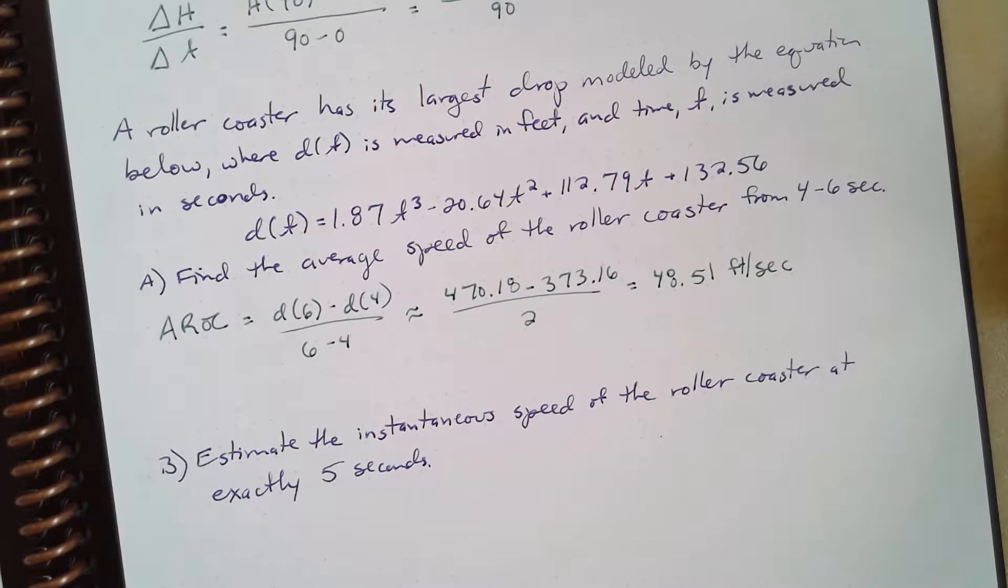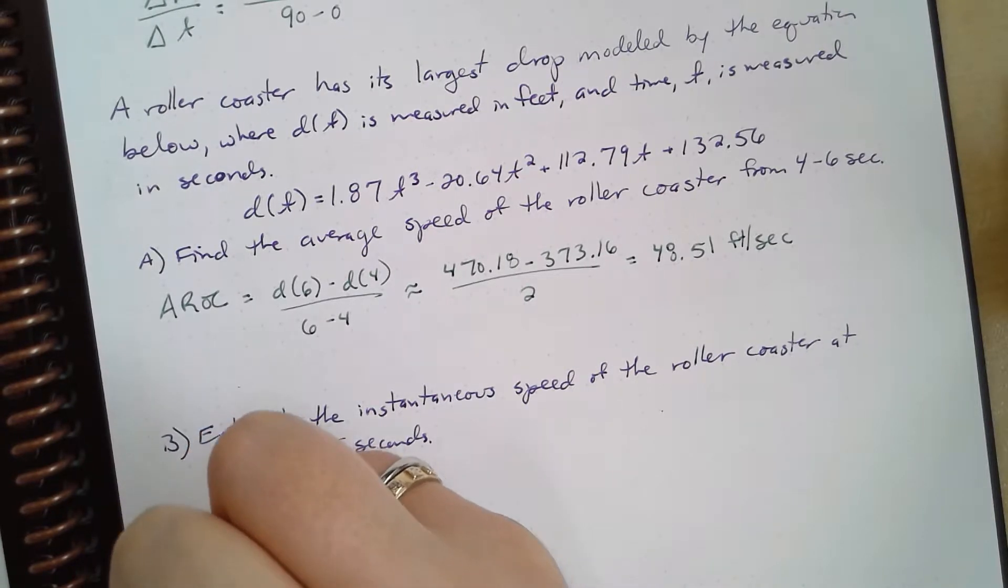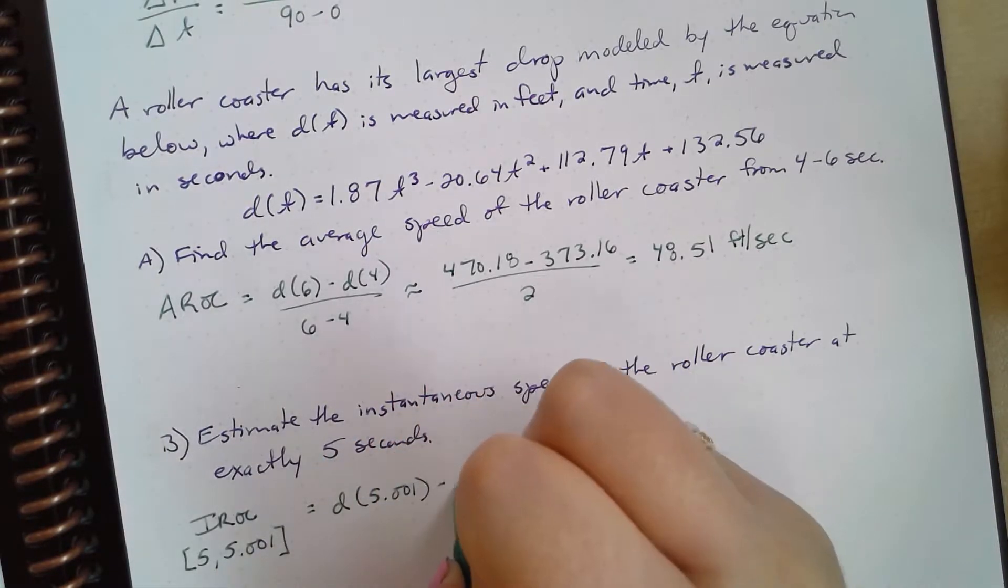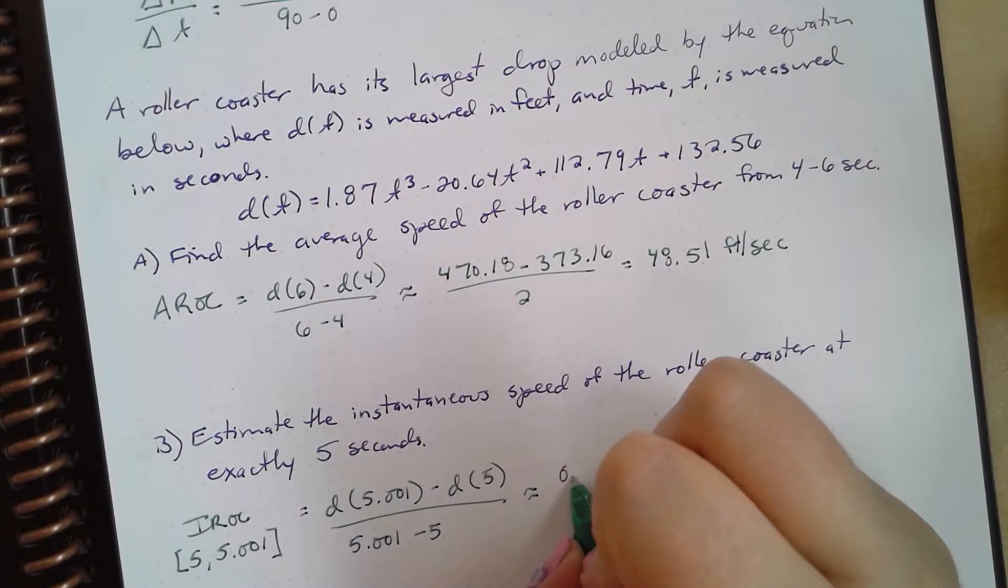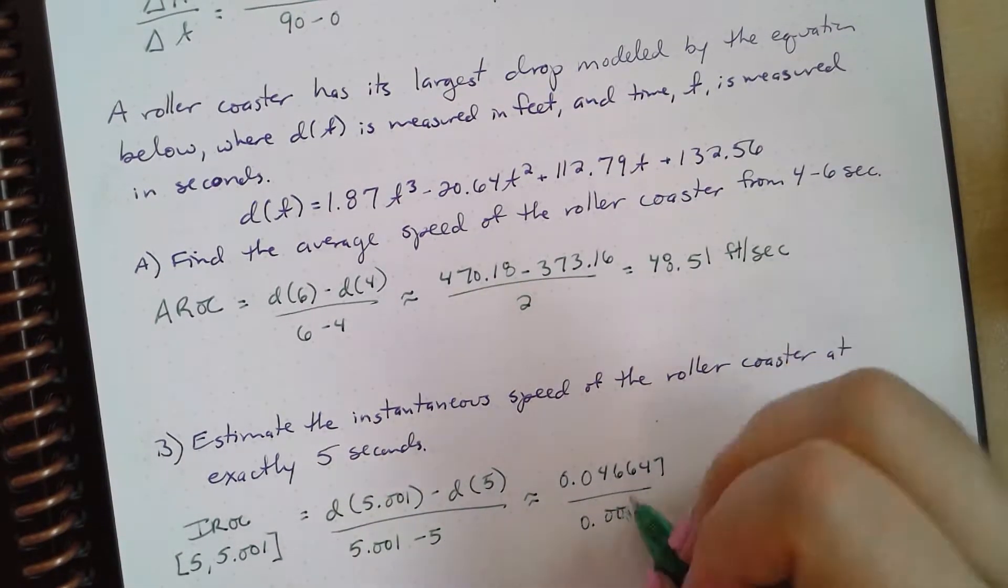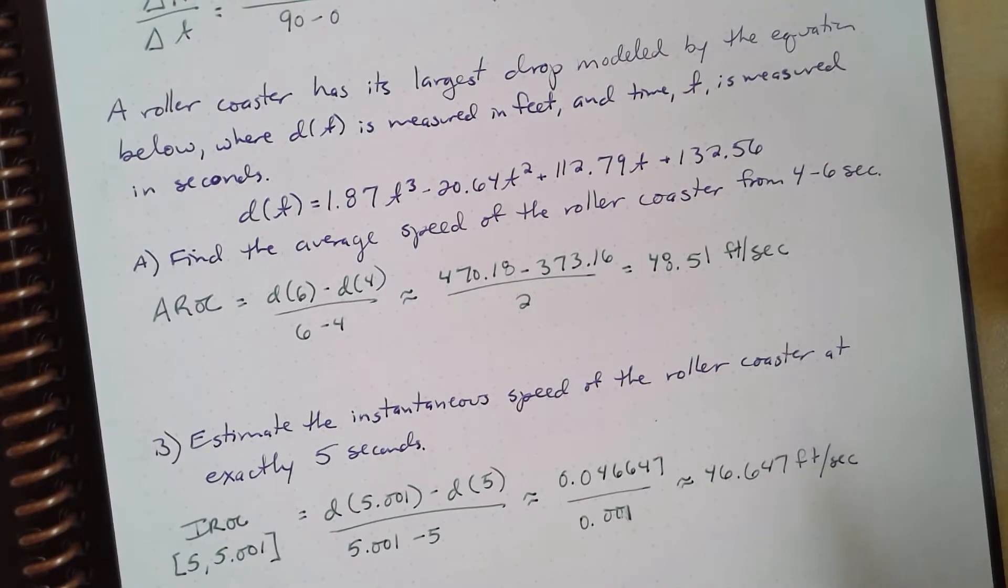Well, we're also asked to estimate the instantaneous speed of the roller coaster at exactly 5 seconds. Well, at exactly 5 seconds, we don't have a formula yet to calculate that speed. So we're going to calculate our instantaneous rate of change, IROC, by just using 5 and 5.001. It's not exactly 5 seconds, but it's very, very close. So our instantaneous rate of change is going to be equal to d(5.001) minus d(5) over 5.001 minus 5, which is approximately 0.046647 over 0.001, which is about 46.647 feet per second.